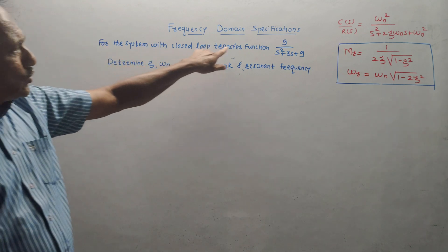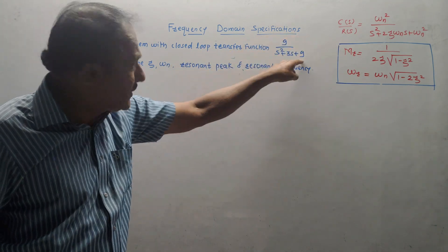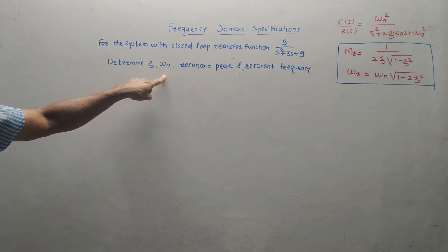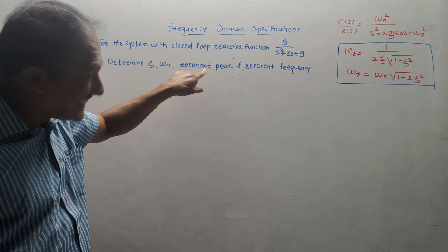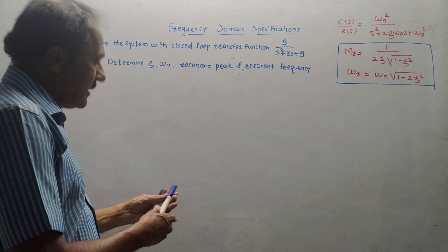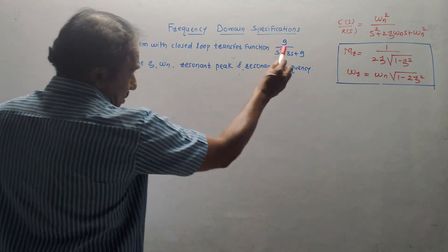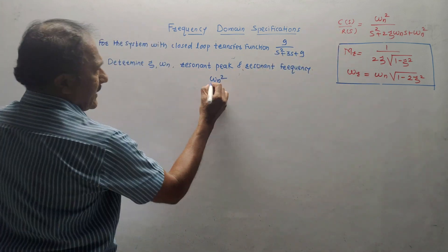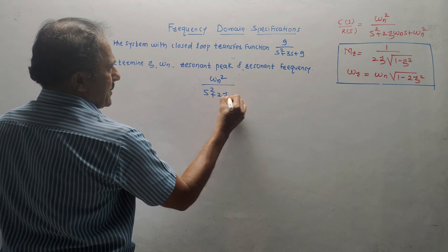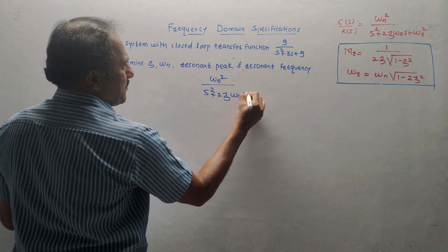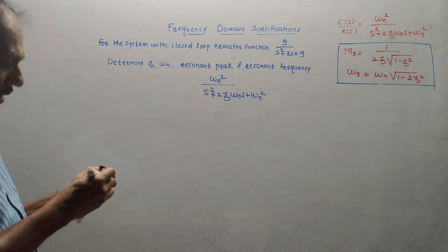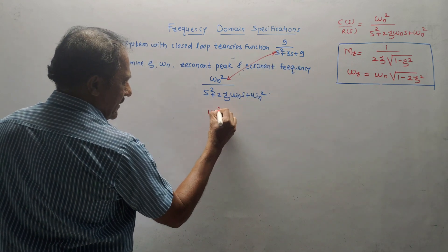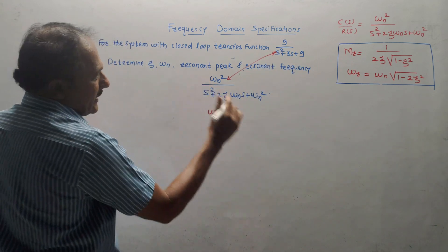The given numerical: for the system with the given closed-loop transfer function, determine zeta (damping factor), omega n (natural frequency of oscillation), resonant peak Mr, and resonant frequency omega r. First I will write the standard equation: ωn² upon s² plus 2ζωns plus ωn². Now compare the given equation with this standard equation.